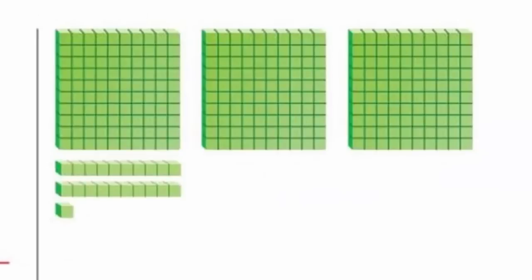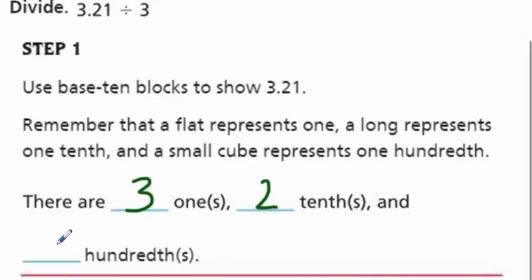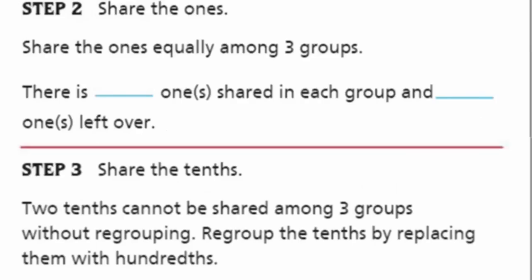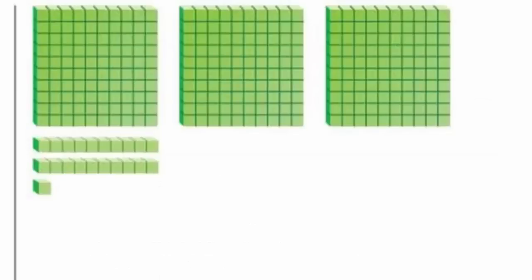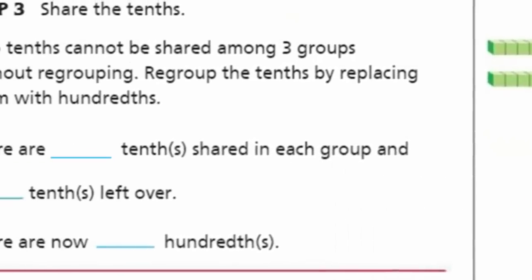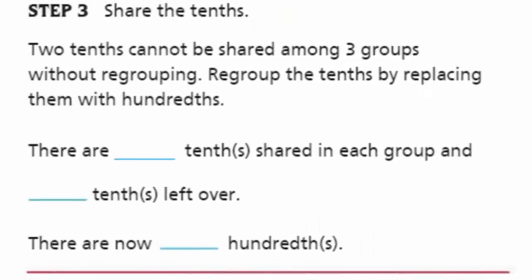So we have 3 ones, 2 tenths, and 1 hundredth. Step 2 says share the ones — share the ones equally among 3 groups. That's really easy because that's going to be 1 in each group and 0 ones are left over. We've had 3 of them — 1 is going to end up in each group. Now let's share the tenths. Well, 2 tenths cannot be shared among 3 groups without regrouping, so we need to regroup the tenths by replacing them with hundredths. 2 tenths is equal to 20 hundredths, so there are 0 tenths that can be shared in each group and 0 tenths left over.